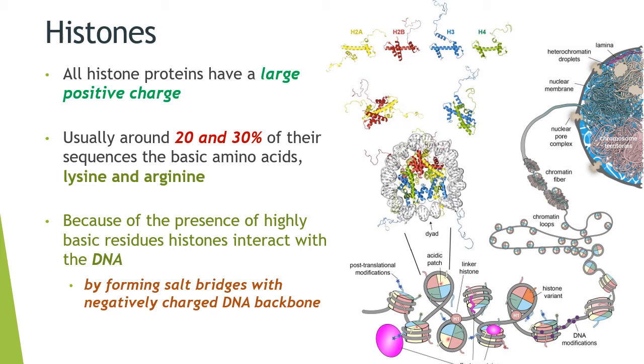They form salt bridges with the negatively charged DNA backbone. As you can see in this picture, in the middle of the diagram, the DNA is bound around the core histones to form a specialized structure which we will discuss later on.